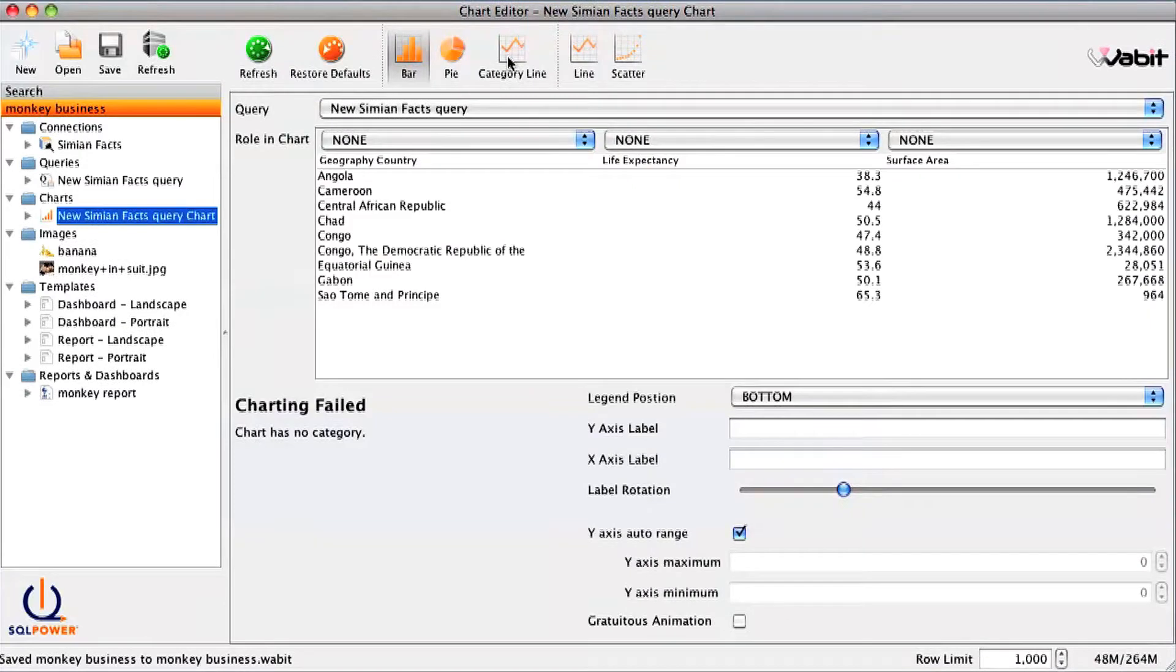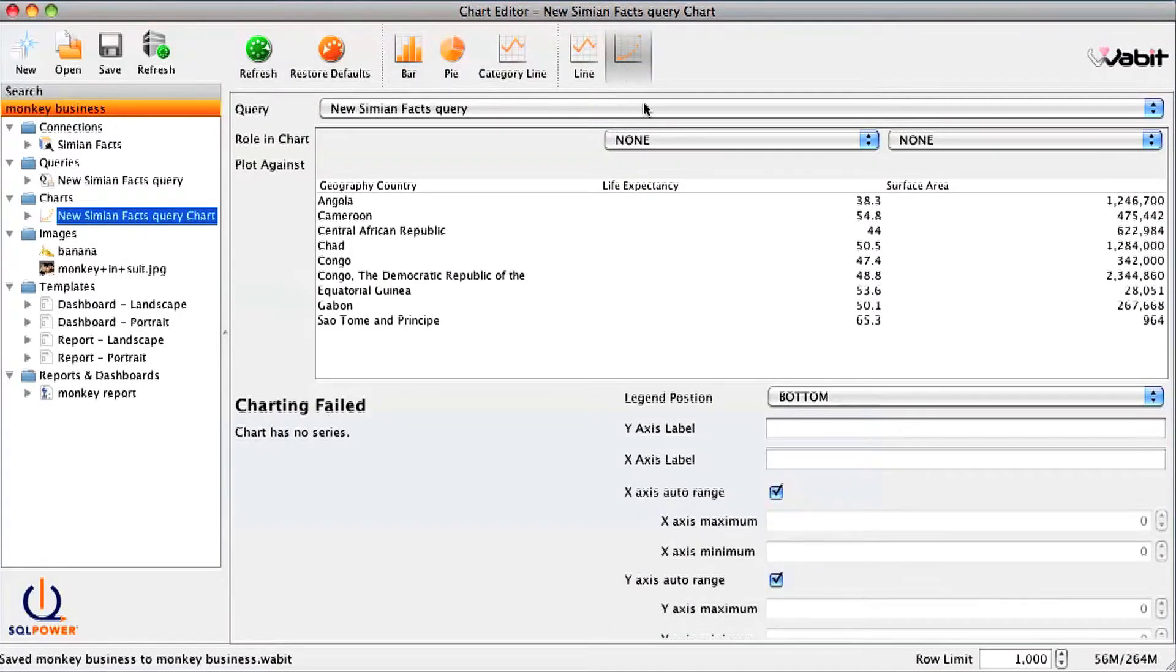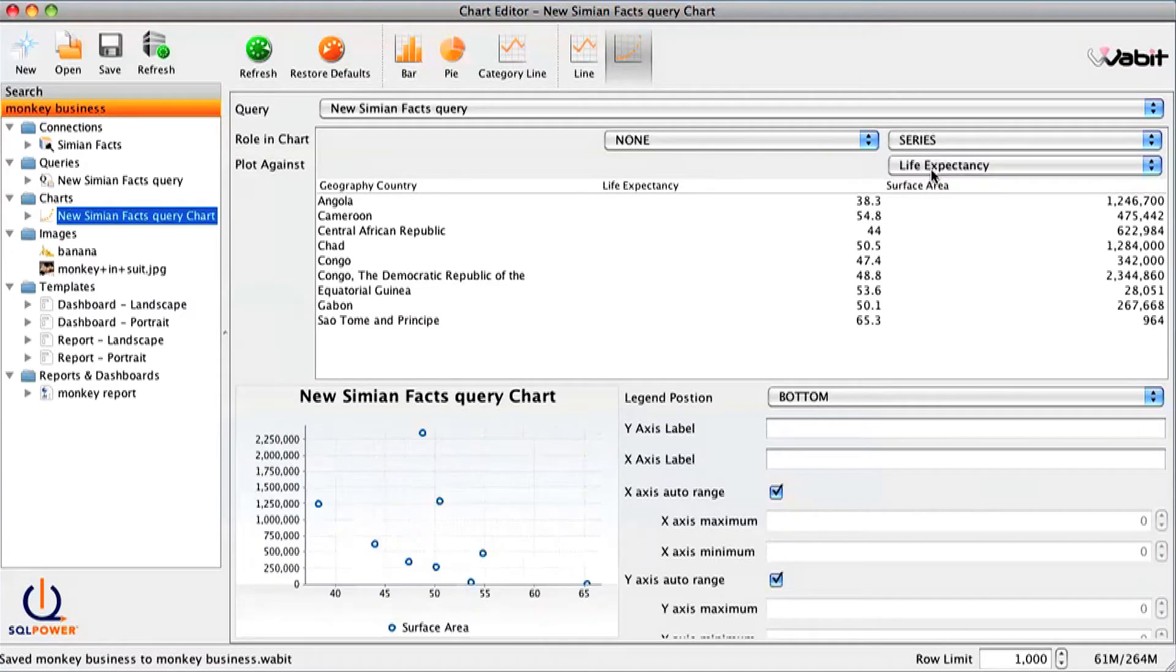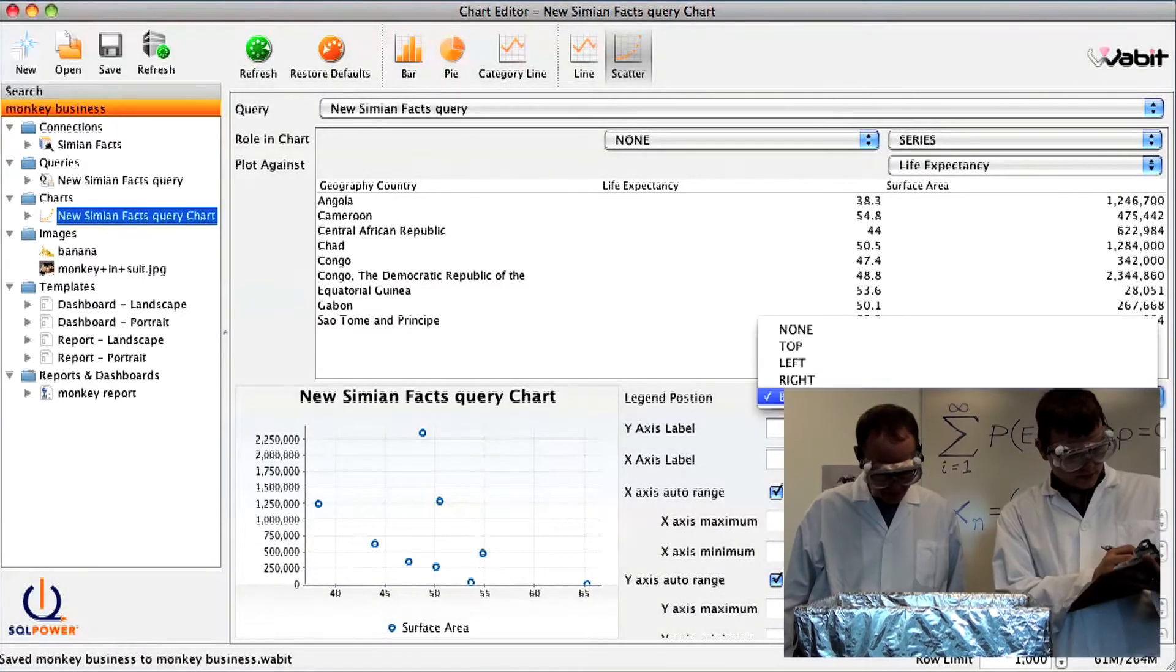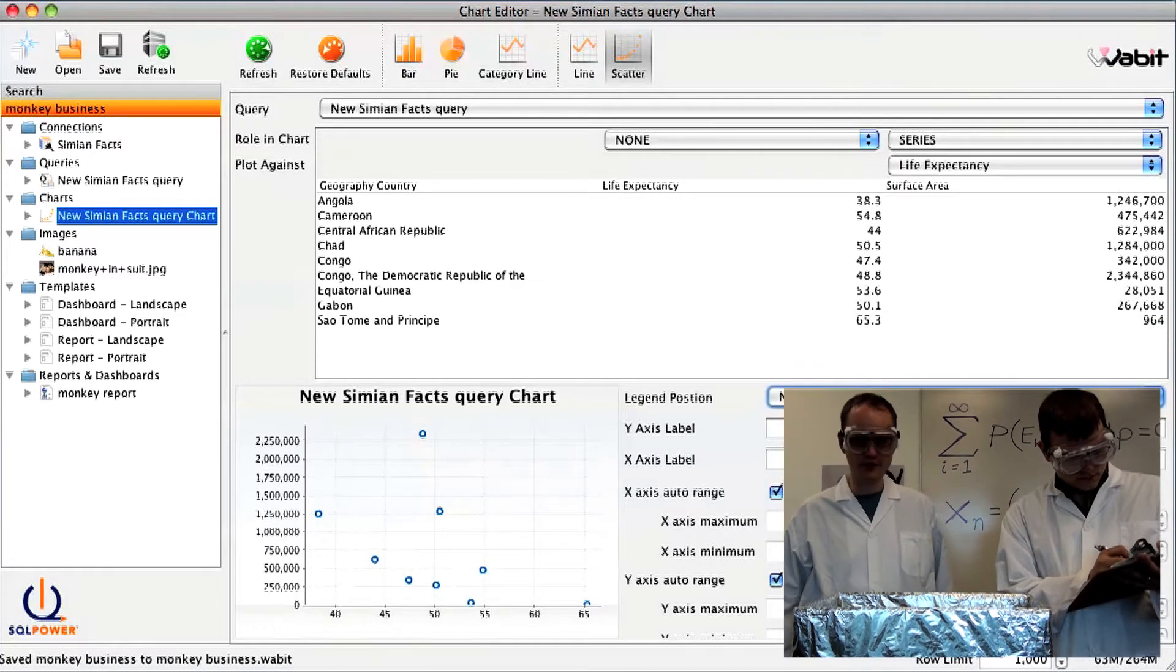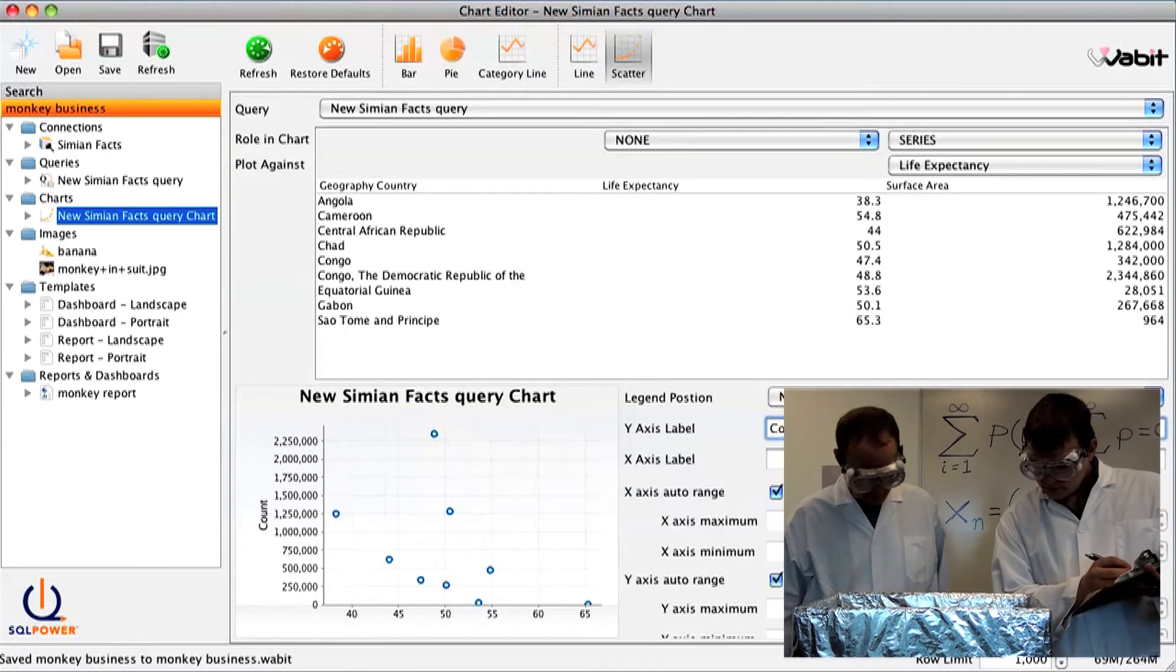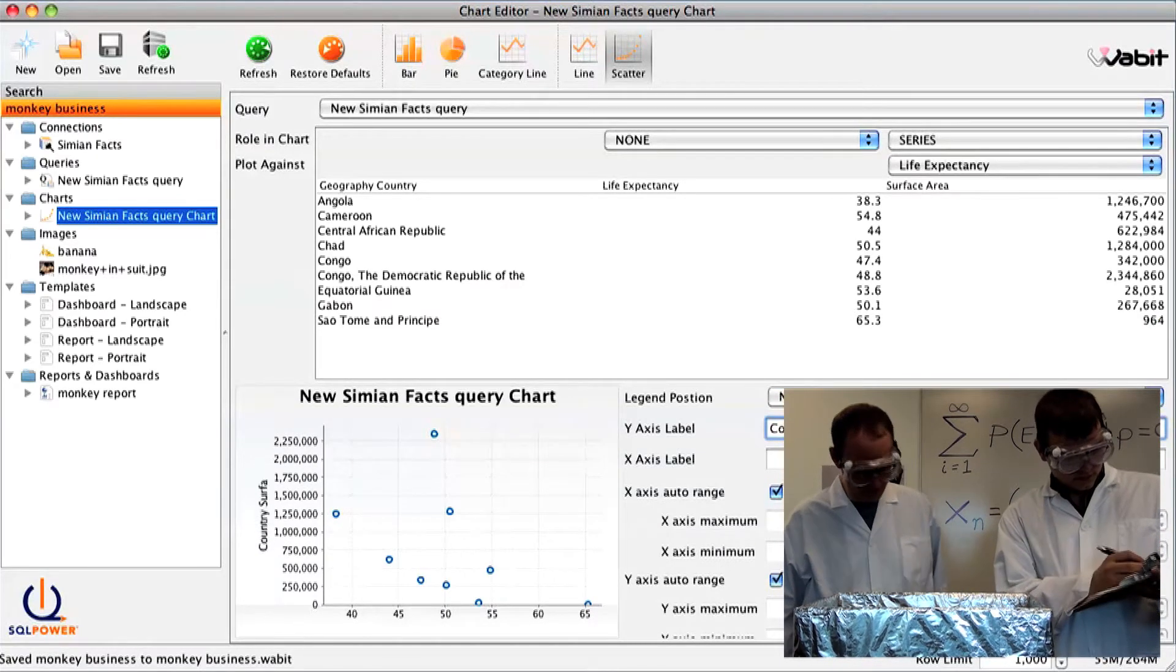Oh yeah, a chart. Oh, it looks like they've plotted surface area against life expectancy. That's very sophisticated. And make a note of that inverse correlation.